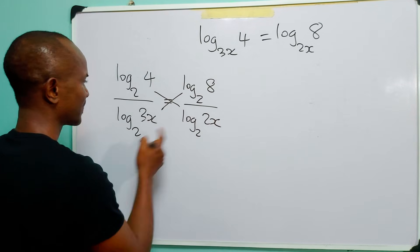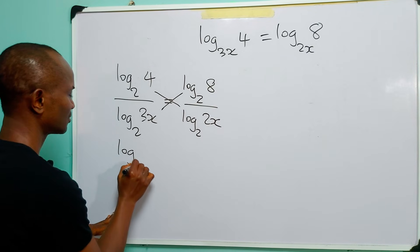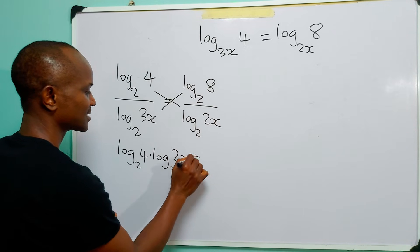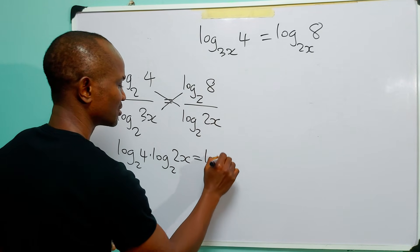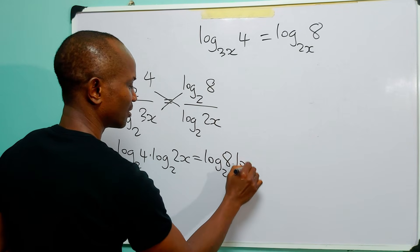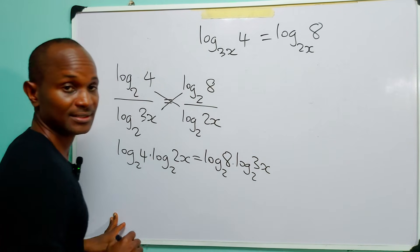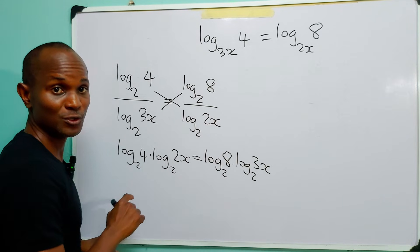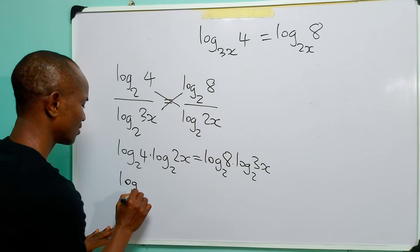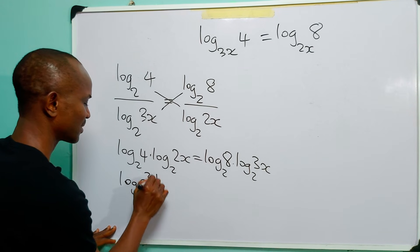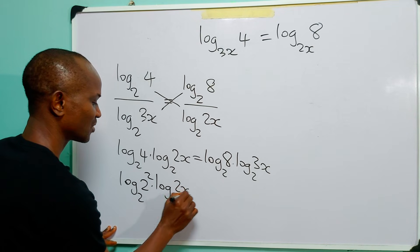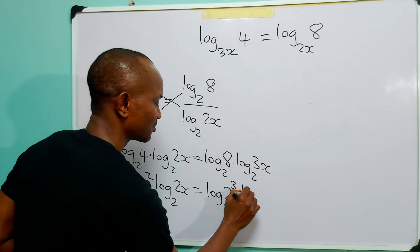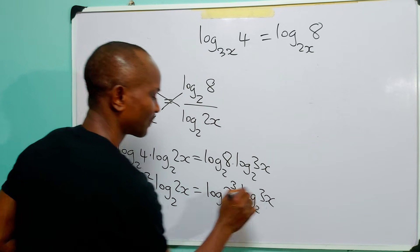The next step is to cross multiply, so we have log base two of four multiplied by log base two of 2x, is equal to log base two of eight multiplied by log base two of 3x. Remembering that four is 2 squared and eight is 2 cubed, we have log base two of 2² multiplied by log base two of 2x, is equal to log base two of 2³ multiplied by log base two of 3x.